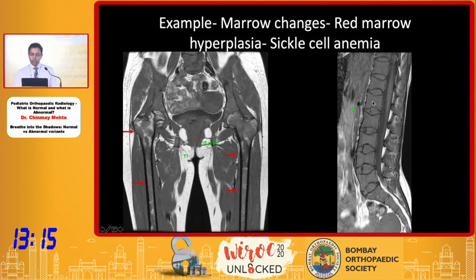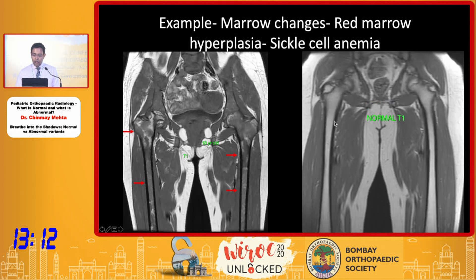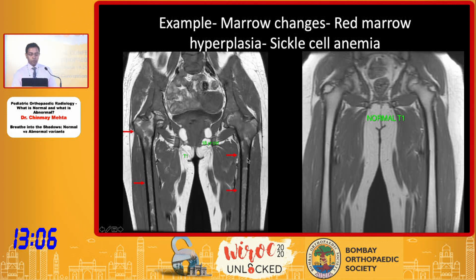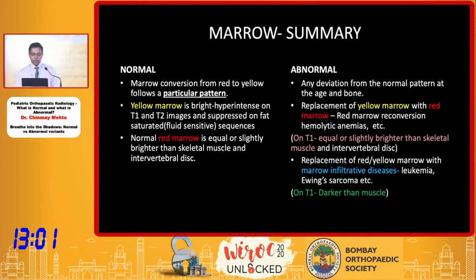On the spine images, this red marrow is equal to the disc signal, and that is why we call this red marrow replacement. This is how a normal 15- to 18-year-old MRI should look, and this is the T1 of our patient. So this is an example of red marrow hyperplasia in hemolytic anemias.